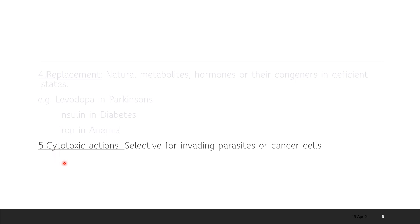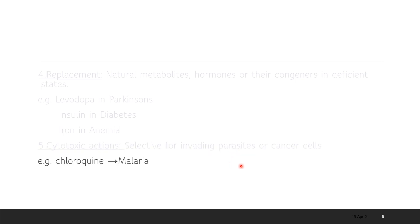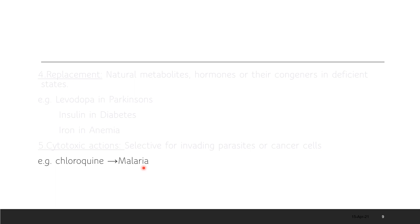Some drugs have cytotoxic actions — for example, anti-cancer drugs or drugs used for parasitic infections. Chloroquine is given for the treatment of malaria. Cyclophosphamide is an anti-cancer drug given for the treatment of various lymphomas. When you cover the whole of pharmacology, you'll be able to write more than ten to twenty examples of each type.